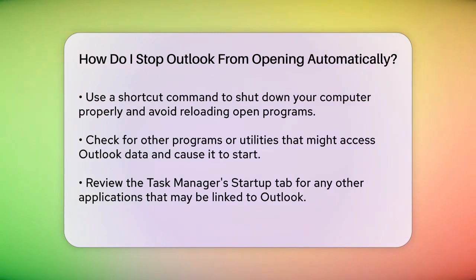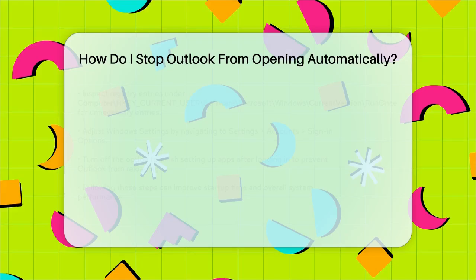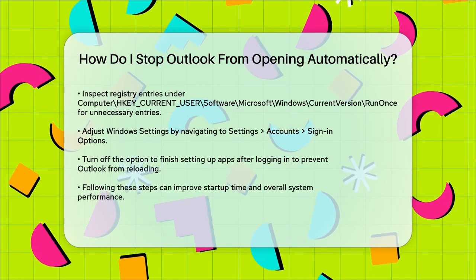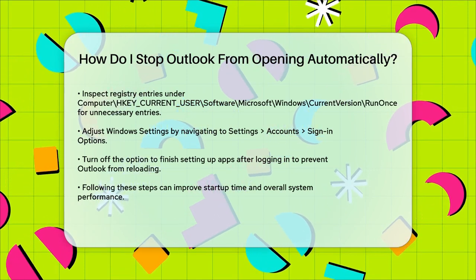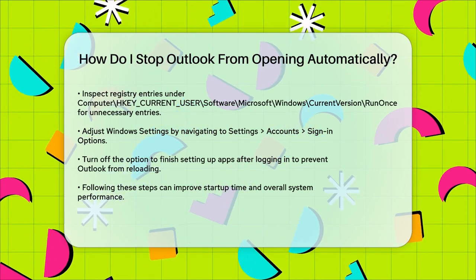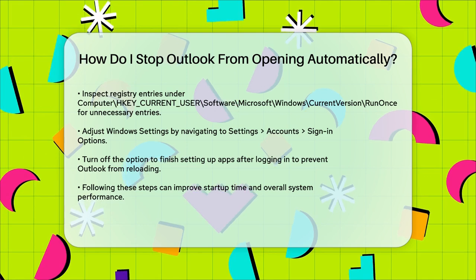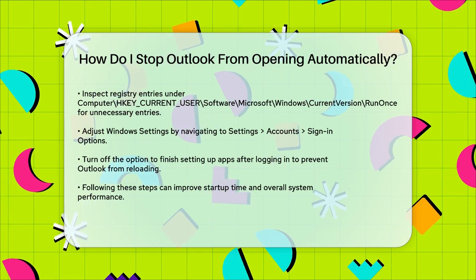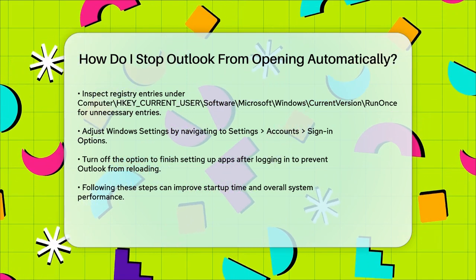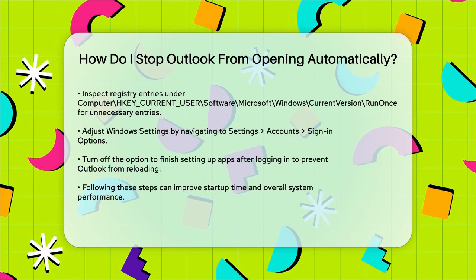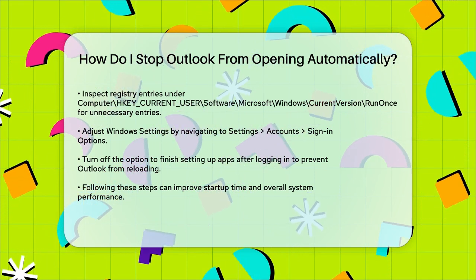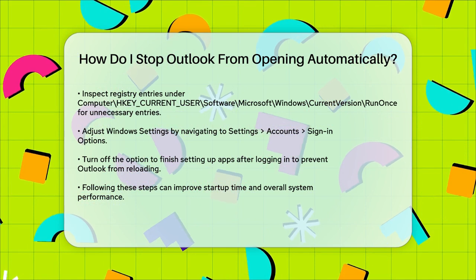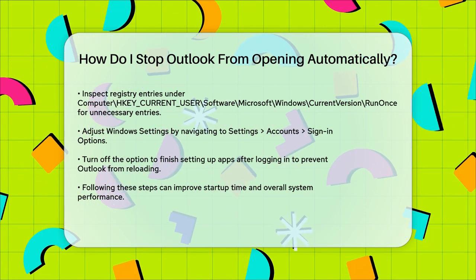If Outlook is still opening automatically and you can't find it in the Task Manager or Startup menu, it might be due to settings within Windows. Go to the Windows Settings app, navigate to Settings, Accounts, Sign-in Options, and ensure that the option to finish setting up apps after logging in is turned off. This can prevent Outlook and other apps from reloading when Windows boots.